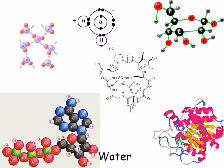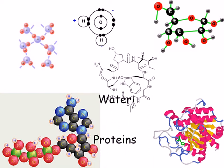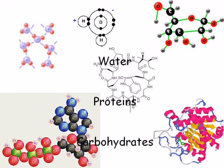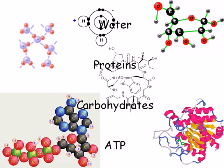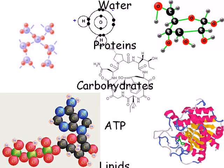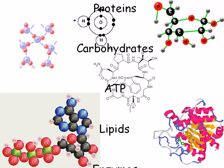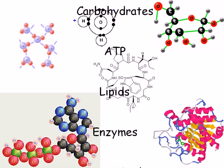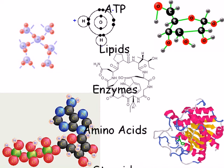It is absolutely impossible to study anatomy and physiology without also having some understanding of basic chemistry. Certainly the human body is made up of many different chemicals that are cellularly and environmentally derived and that interact with one another in a vast variety of ways. An understanding of basic chemistry is crucial to appreciate the importance of water, proteins, carbohydrates, and ATP to human life.